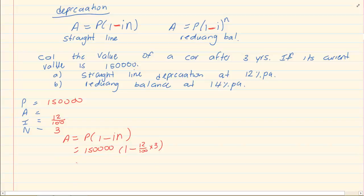Put it in your calculator. 150,000 open brackets, 1 minus 12 over 100 times 3, which will equal to 96,000. So the method is exactly the same. You write down your payment. You substitute whatever information you have. And then you simply solve.